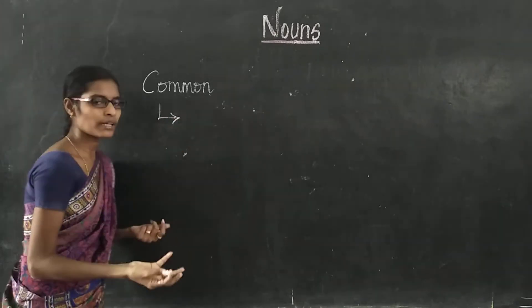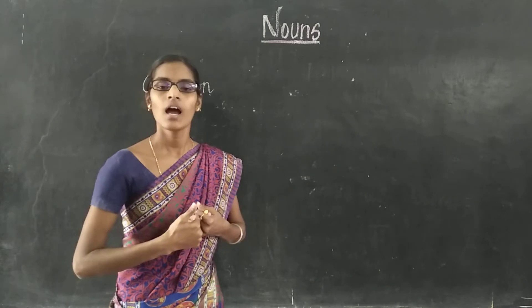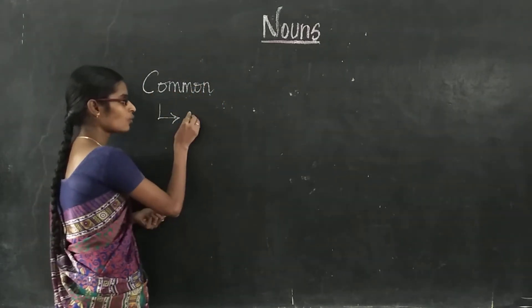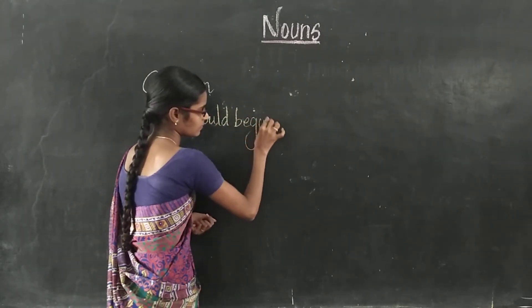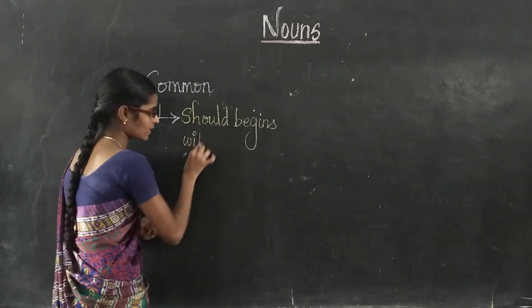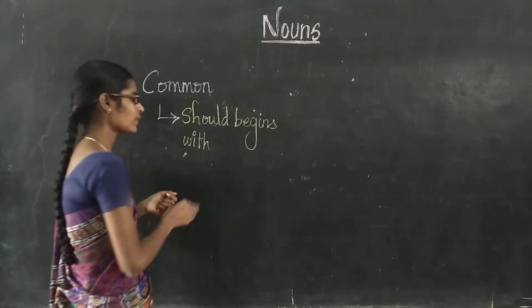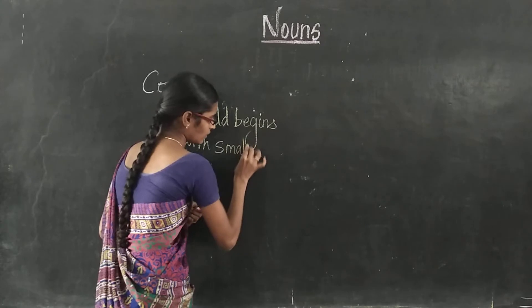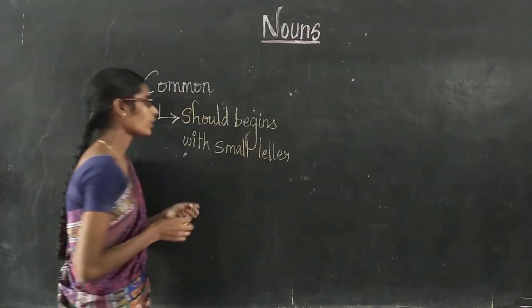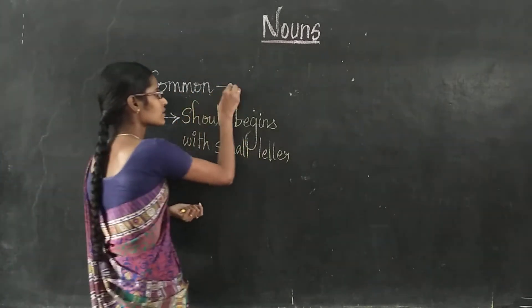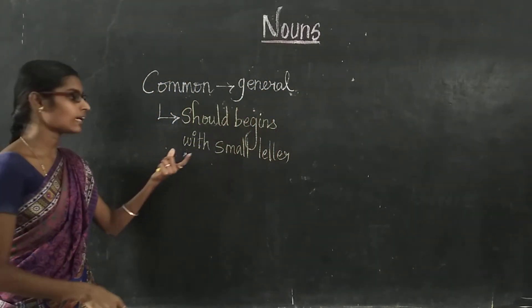Common Noun. What is a Common Noun? The noun which denotes a general name — we call it a Common Noun. Common Noun begins with small letters. It denotes general names and it begins with small letters.